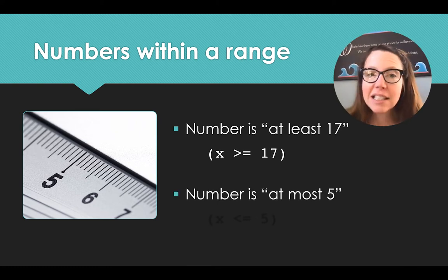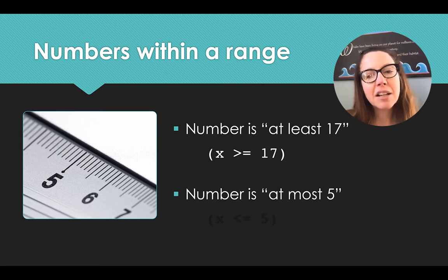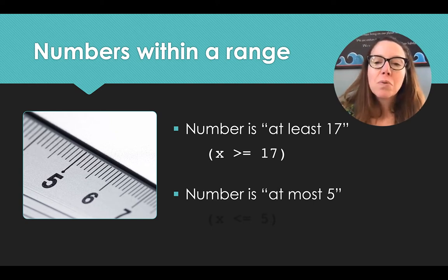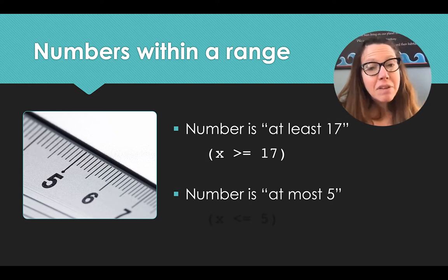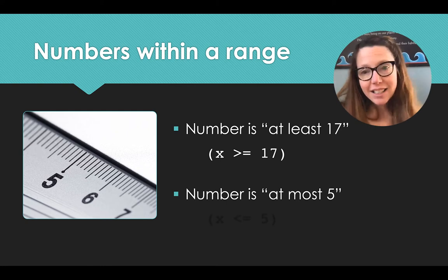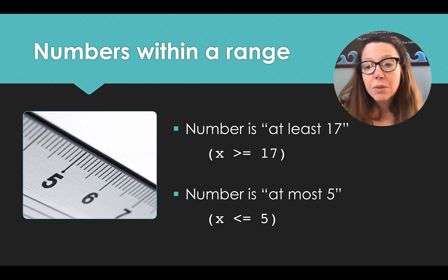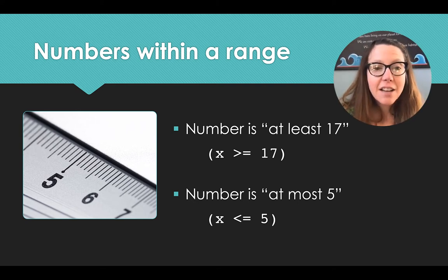Another one that's similar in its confusion is if we say a number is at most five. So if a number is at most five, what we're saying is that it can be five, but that's the highest it can be. It can be at most five. So in this case, we're looking at numbers X less than or equal to five. Five or less.